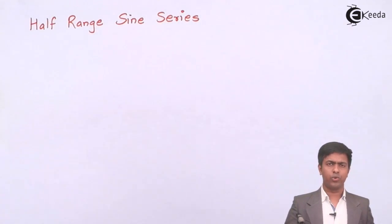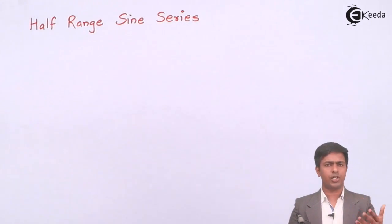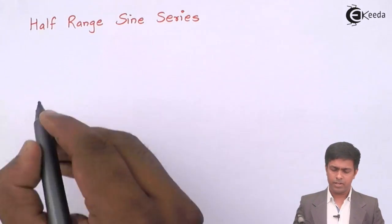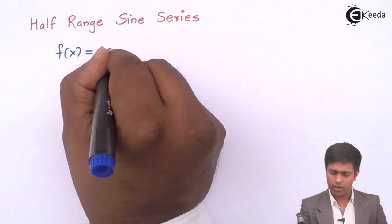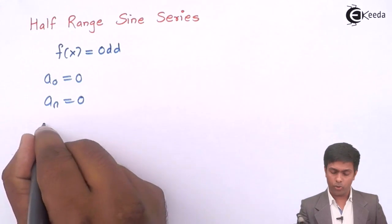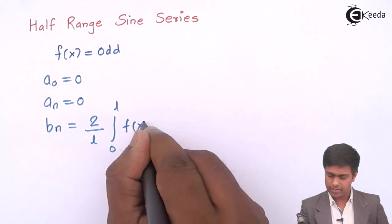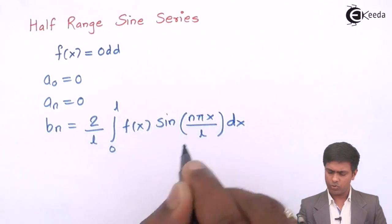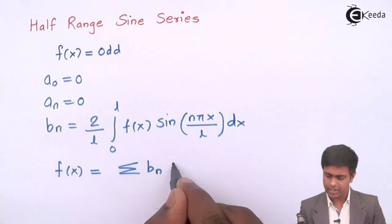Now let's move to the half range sine series. To understand it, we take a function in 0 to π or 0 to l and take its reflection in the opposite quadrant, because we get the half range sine series when the function is odd. From the even and odd function perspective, if f(x) is odd, a₀ = 0, aₙ = 0, and bₙ = (2/l) ∫₀ˡ f(x) sin(nπx/l) dx. So we get only the sine terms in the Fourier series.